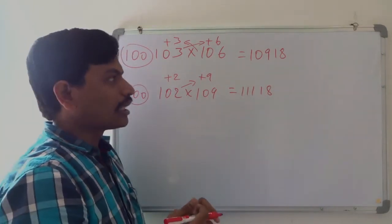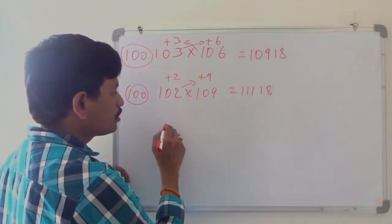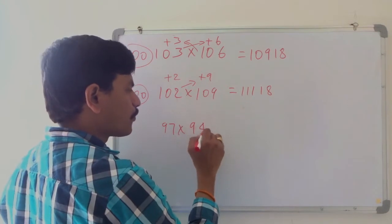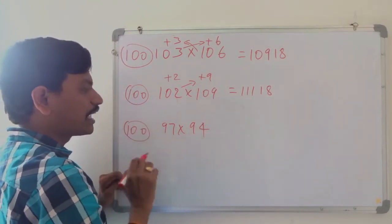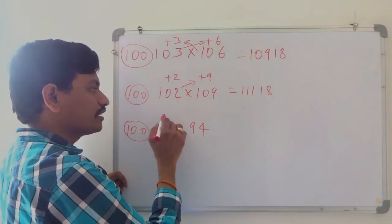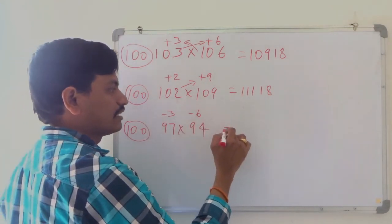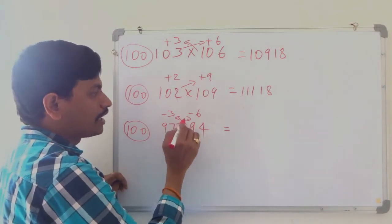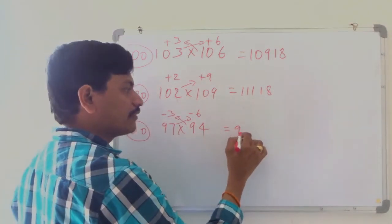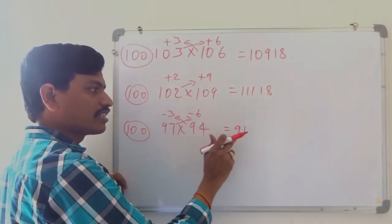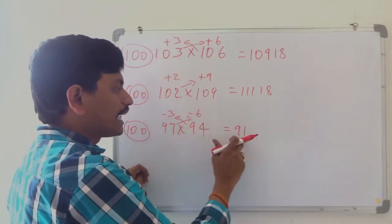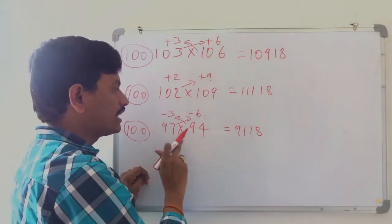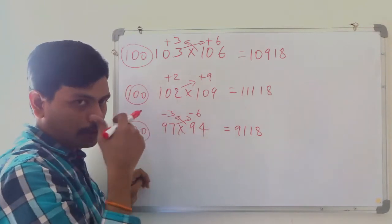Like this we can also take numbers from 90 to 100. So two numbers: 97 multiplied by 94. Base is 100. 97 is how much lesser? Minus 3, and 94 is minus 6. Cross subtraction: 94 minus 3 is 91, same as 97 minus 6 is also 91 — do any one of them. So 91, and 6 threes are 18. So 9118 is the multiplication of 97 into 94.